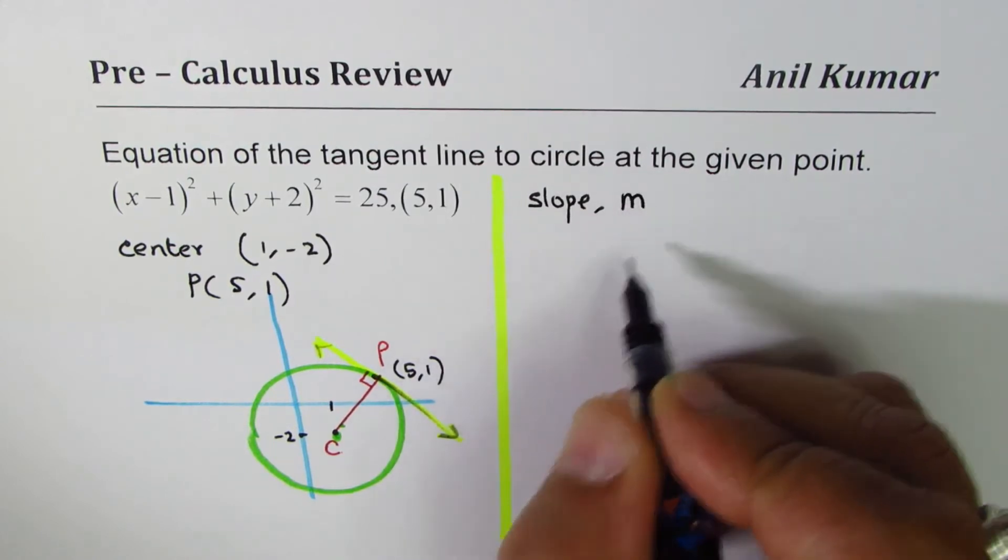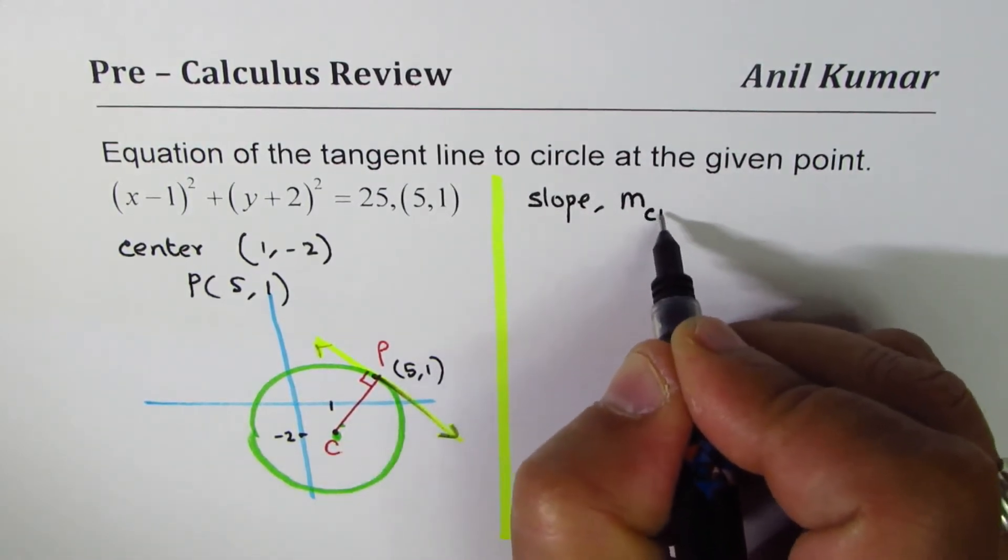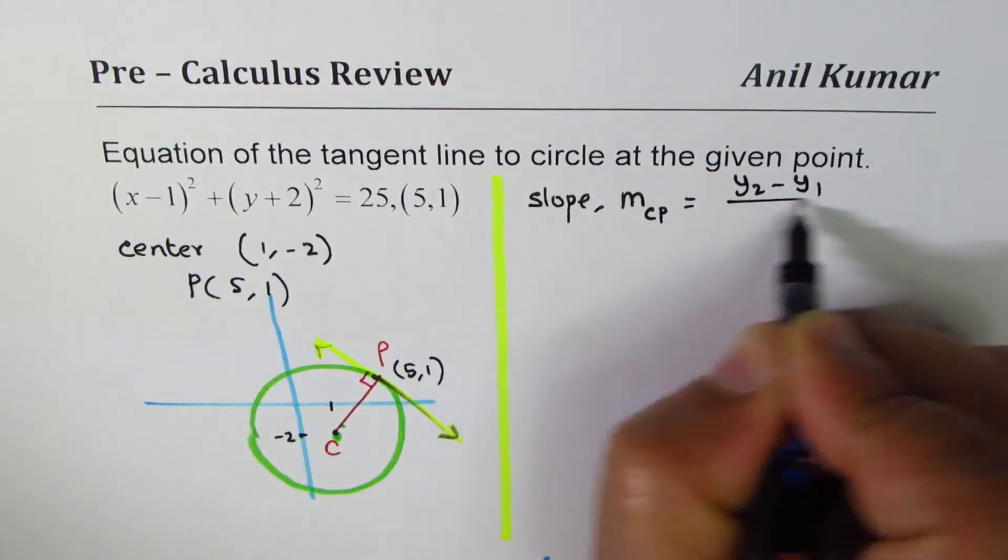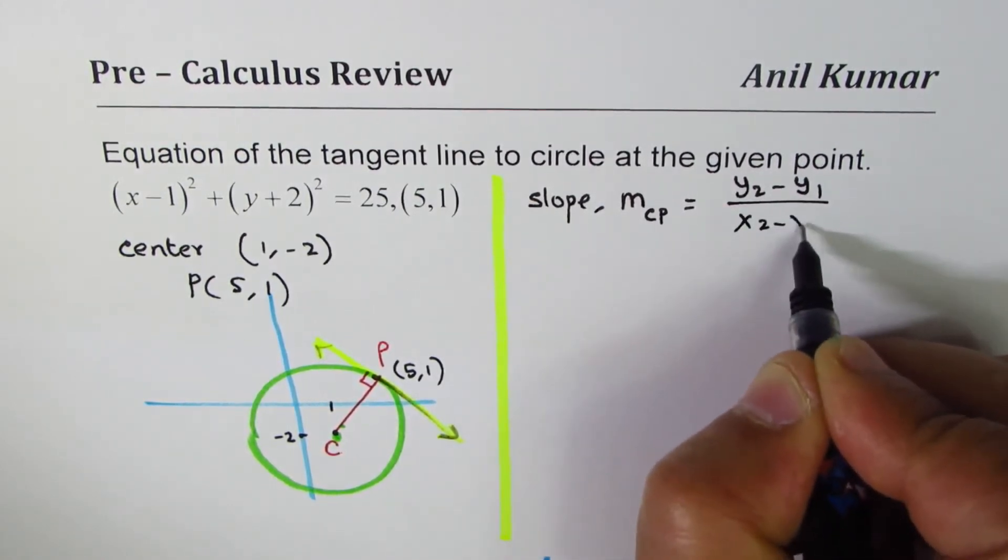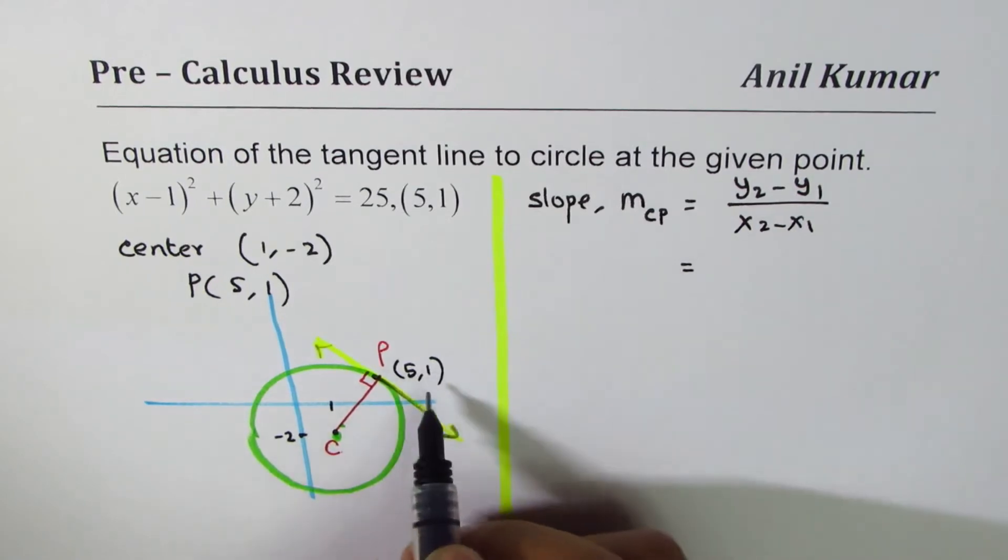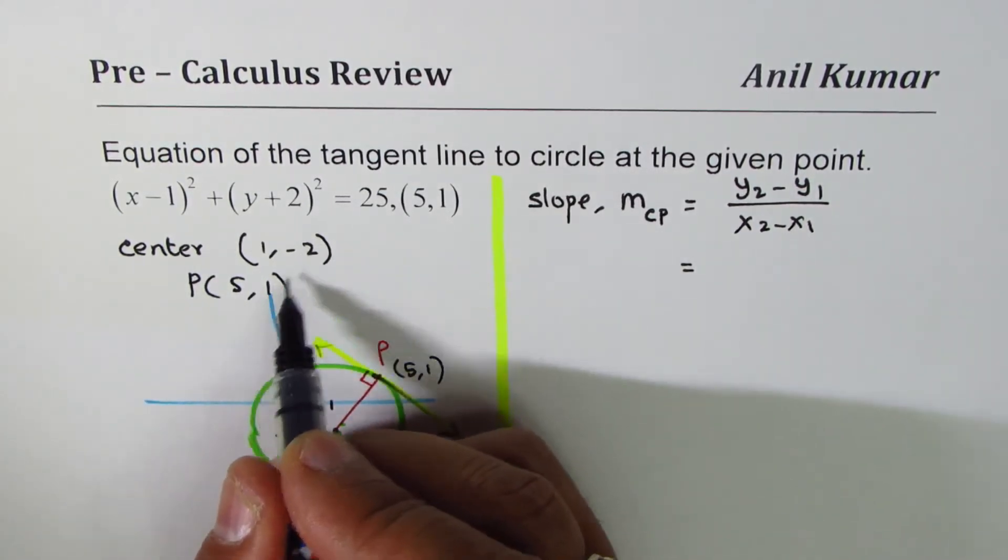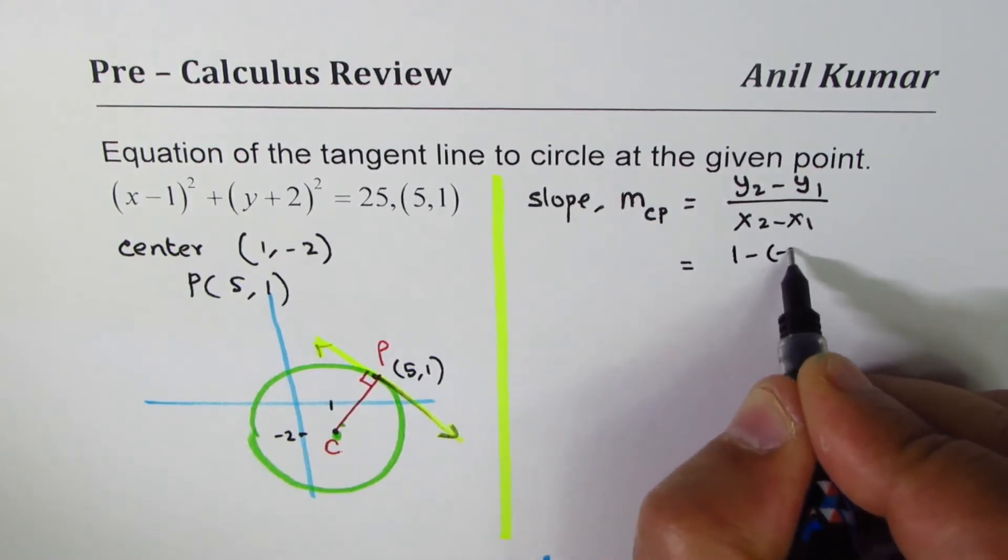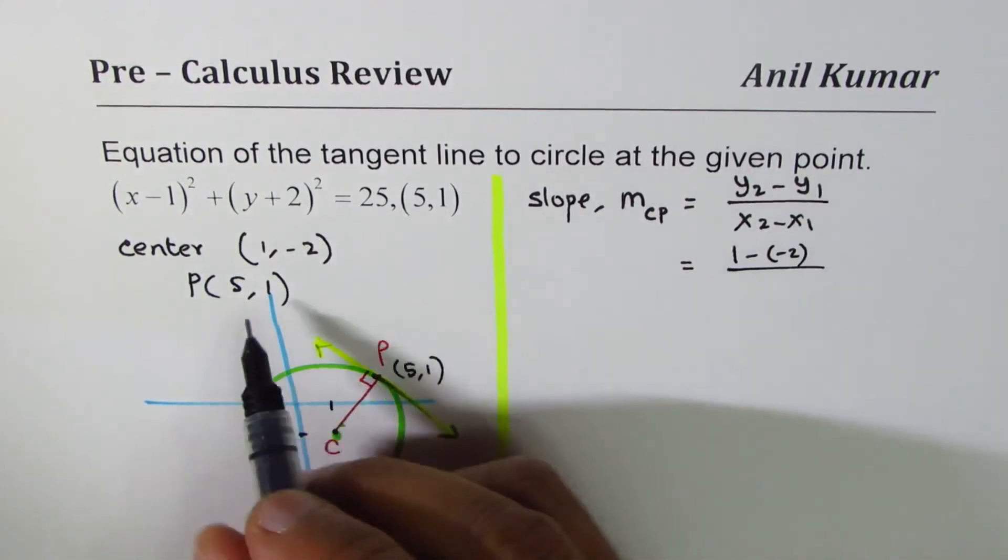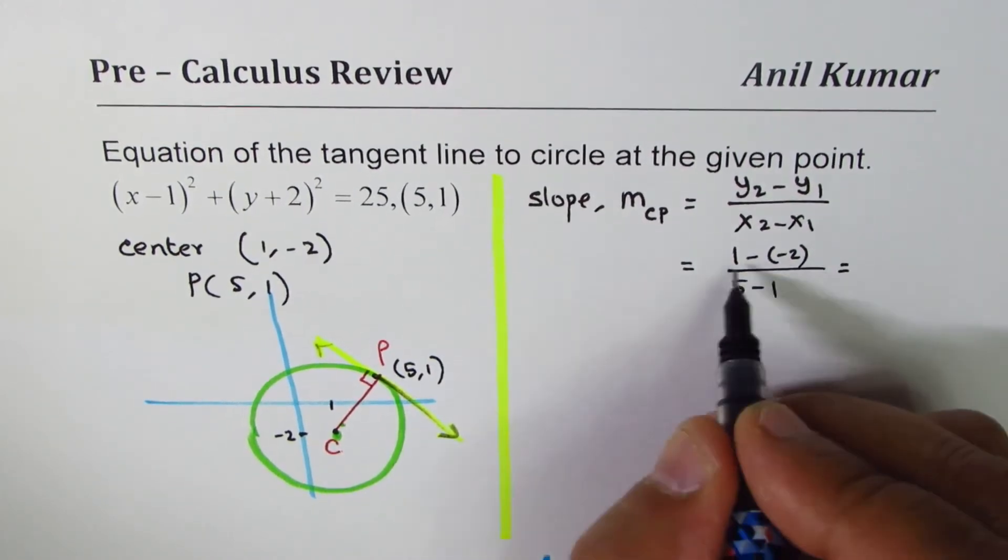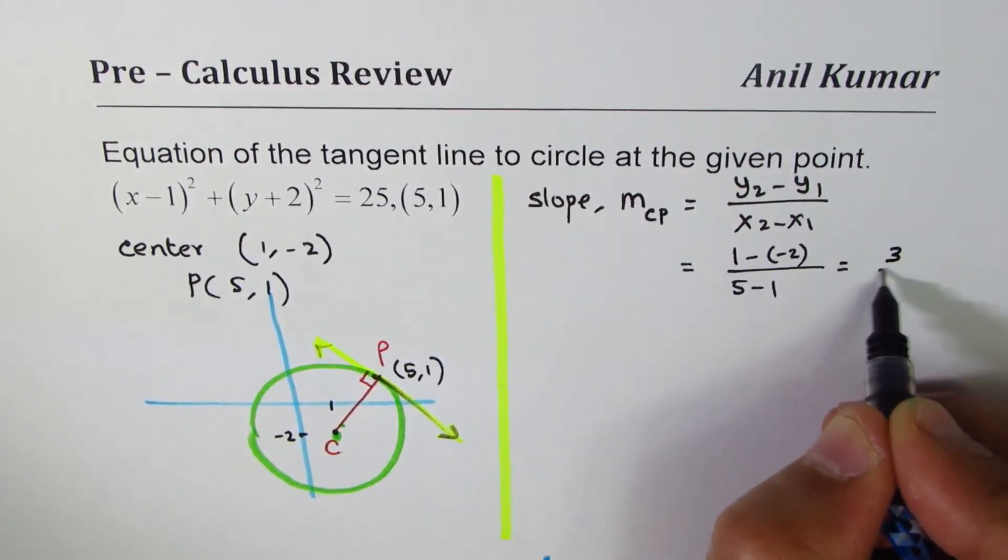Let's call this m_CP. Slope of m_CP will be the formula y₂ - y₁ divided by x₂ - x₁. So these are the two points. So 1 minus (-2) divided by 5 minus 1, which is 5 minus 1. That makes it 3, and this is 4.